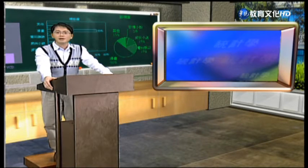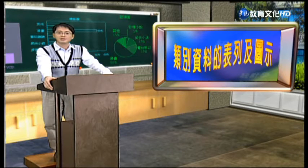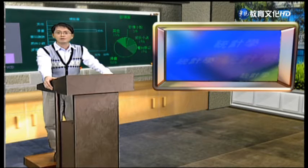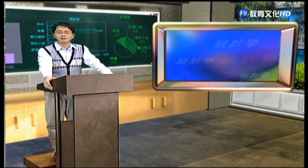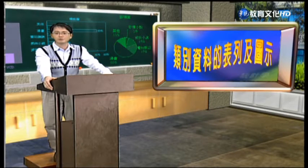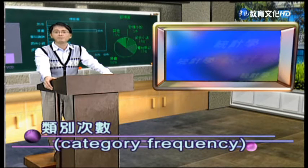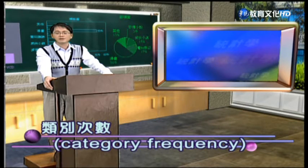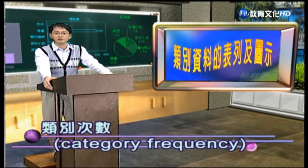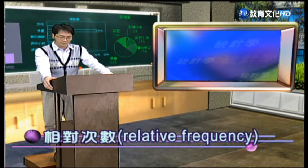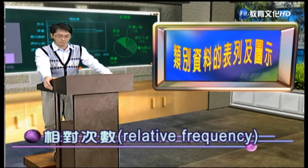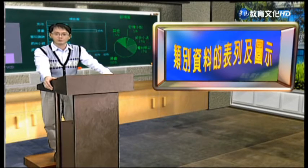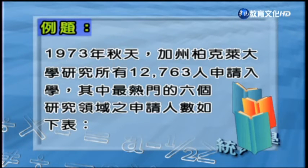接下來我們開始依序用一些例子來說明這些統計圖表的使用方法及時機。首先針對類別資料的形態，它的表列及圖示方法。類別的資料算是一種定性的資料，這些資料沒有辦法做運算的處理。我們一般處理類別的資料，會習慣先整理各個分類來計算次數，這些次數就叫做類別次數。再將類別次數除以資料總次數，可以得到相對次數（頻率）。